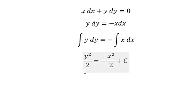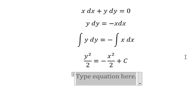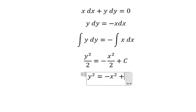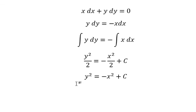After that, we multiply both sides by 2, and then we put the square root on both sides.